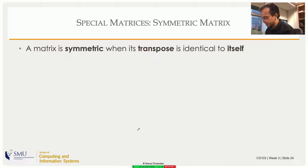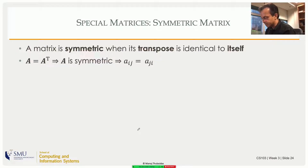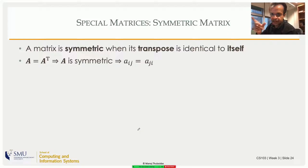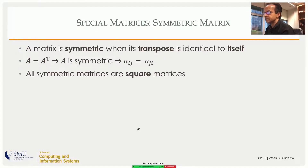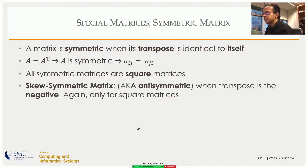If a matrix is symmetric, its transpose is the same as itself: A equals A-transpose. That is the definition of a symmetric matrix. Is it possible for a matrix to be symmetric and not square? It's not, because if you take the transpose of a rectangular non-square matrix the shape is already different, so those two matrices can never be equal. All symmetric matrices are square matrices.